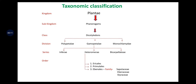The taxonomic classification goes like this: Kingdom Plantae, Subkingdom Phanerogamae, Class Dicotyledoneae further divided into Polypetalae, Gamopetalae and Monochlamydae Division. Division Gamopetalae is divided into Ceriae, Inferae, Heteromerae and Bicarpellatae. Heteromerae series is further divided into order Ericales, Primulales and Ebenales.